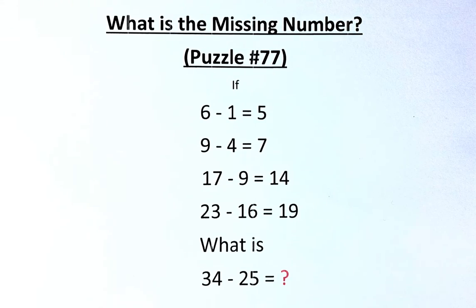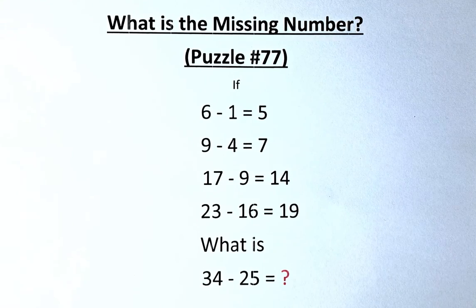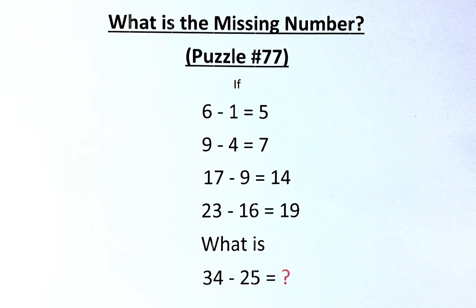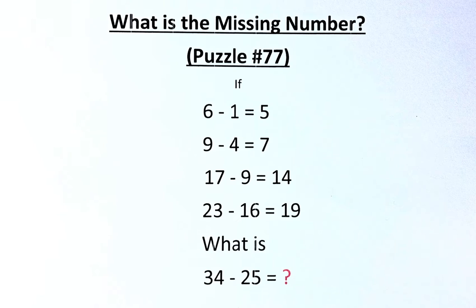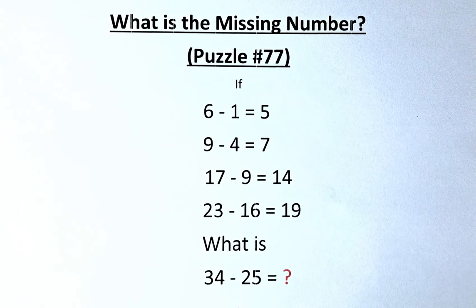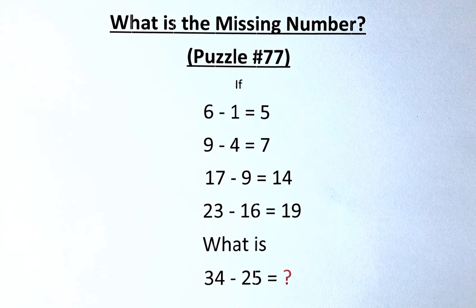If 6 minus 1 equals 5, 9 minus 4 equals 7, 17 minus 9 equals 14, 23 minus 16 equals 19, what then is 34 minus 25 equals?